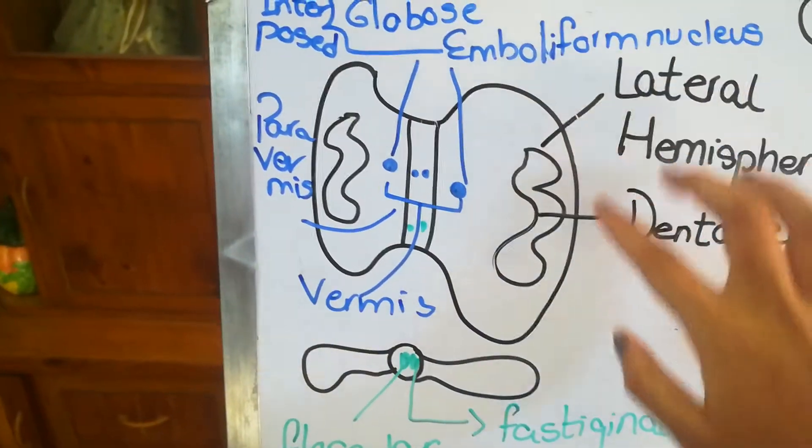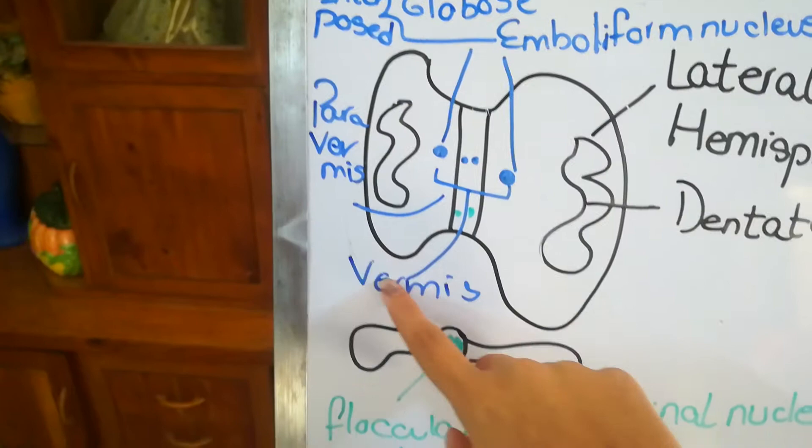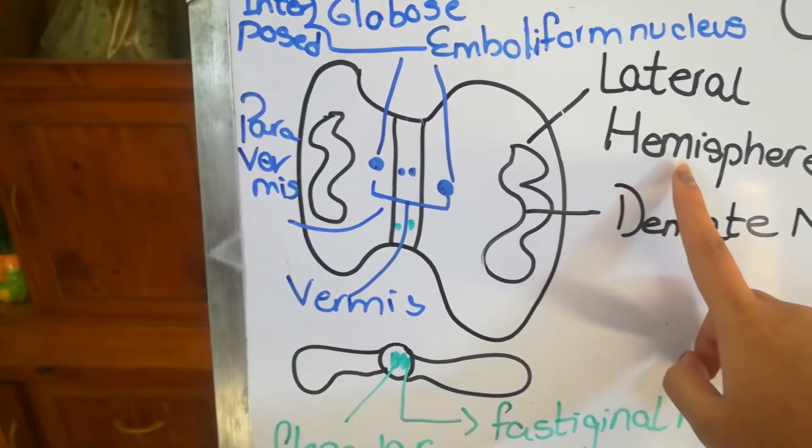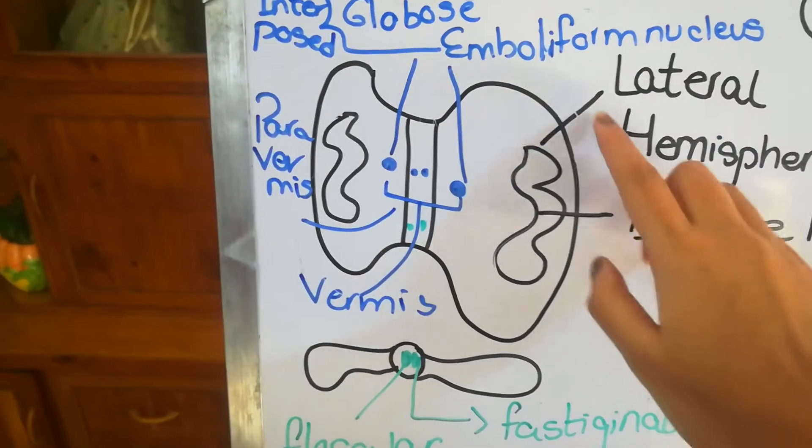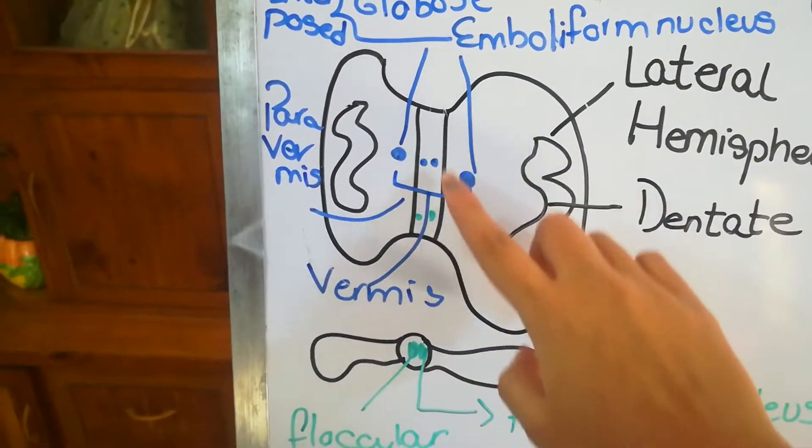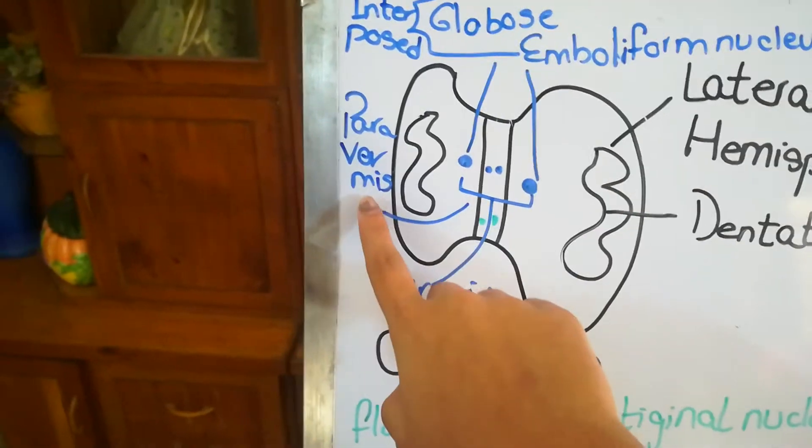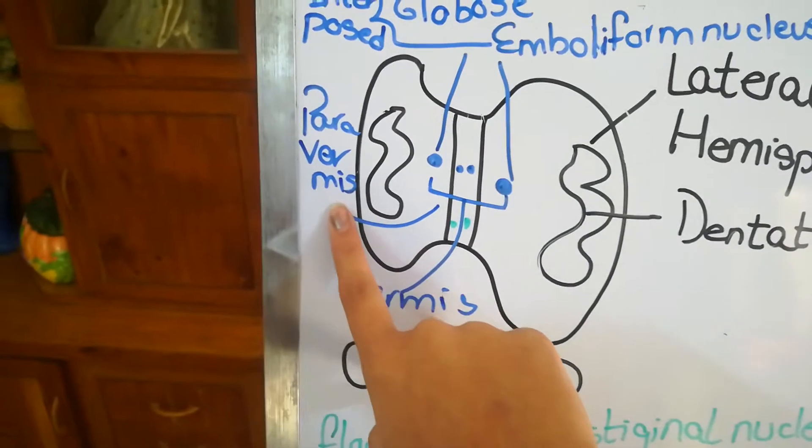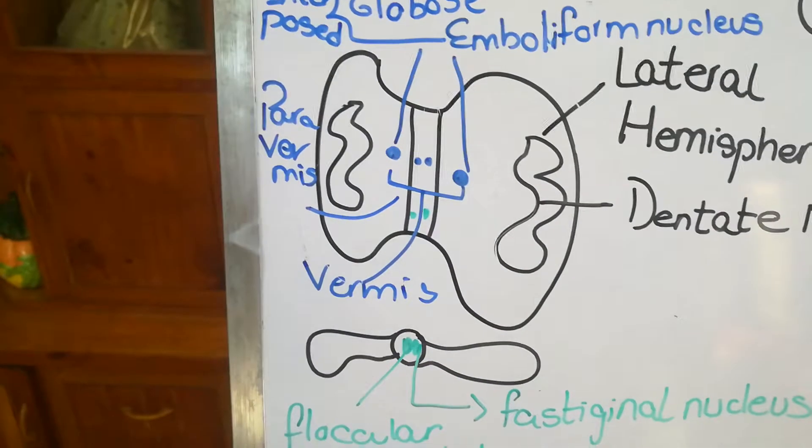These lateral areas are called the lateral hemispheres or cerebellar hemispheres. The area between the cerebellar hemispheres and the vermis is called the paravermal area or intermediate zone.